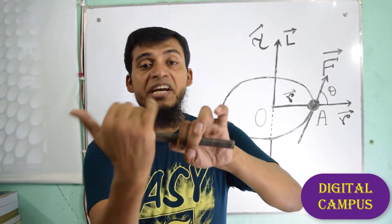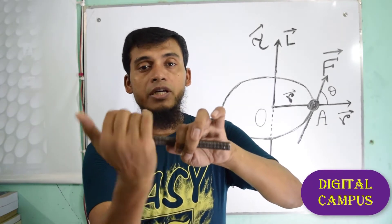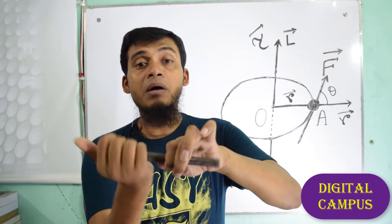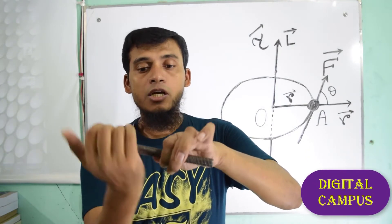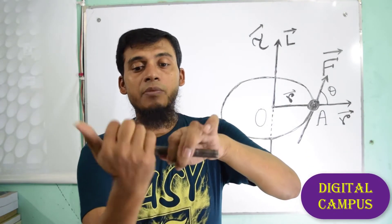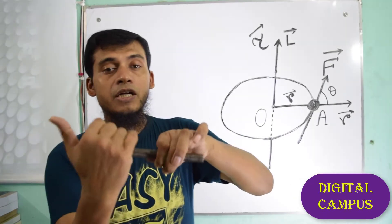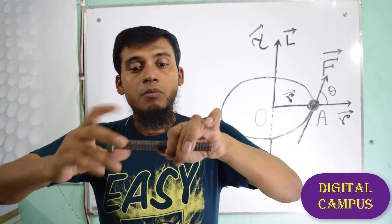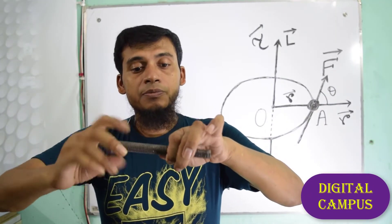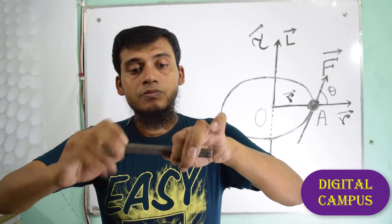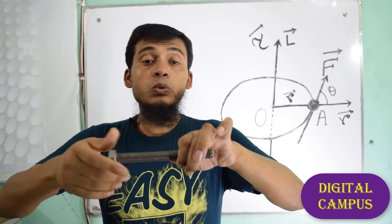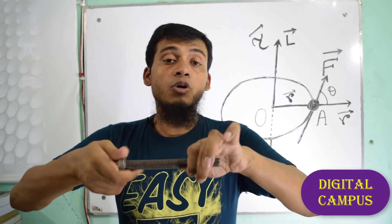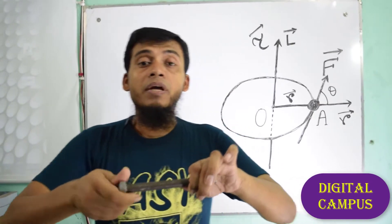If the screw rotates clockwise, it goes inward. That means it moves from left to right. Conversely, if you rotate the screw in the opposite direction — counterclockwise — then the screw comes out of the surface. That is the Right Hand Screw rule.